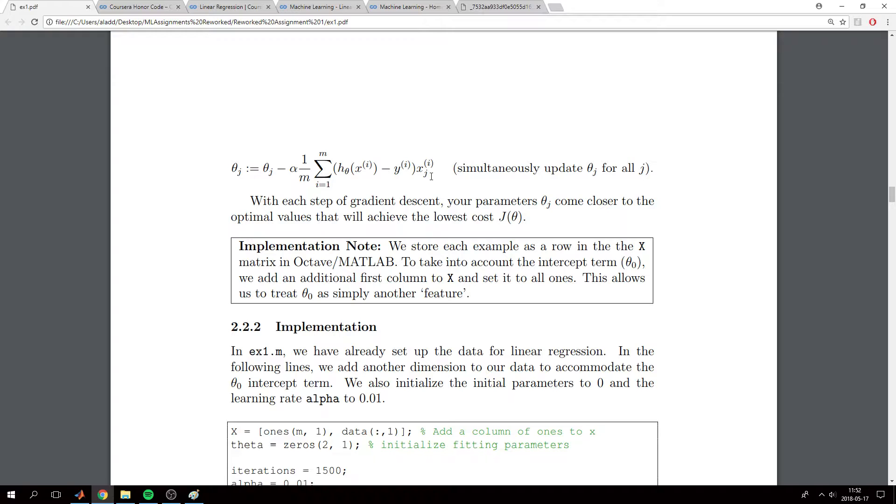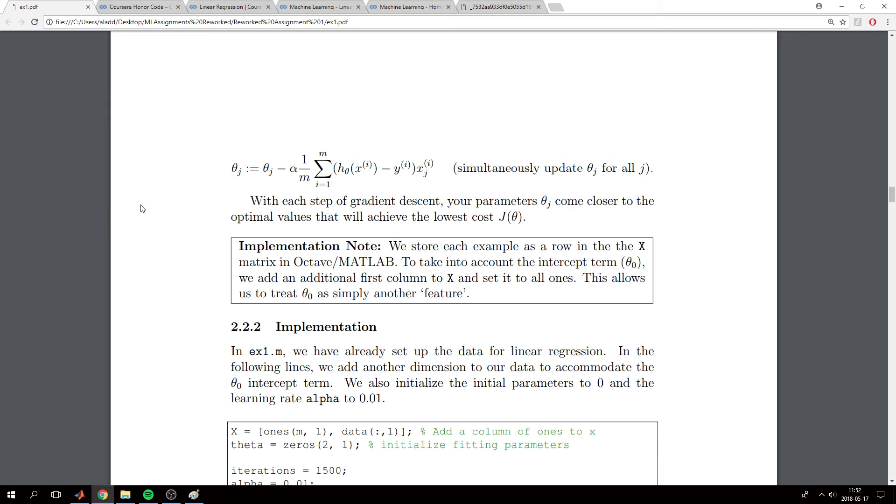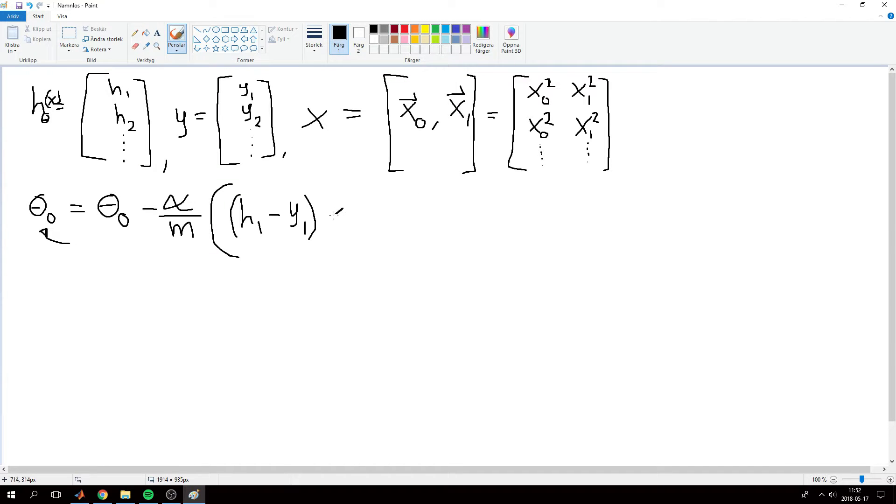And then it will take that times x feature 0, because we have theta_0. So we will have x feature 0 training example 1.